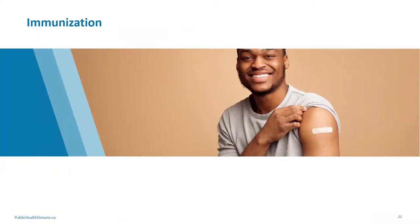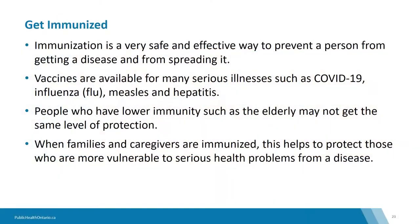Now let's talk a little bit about immunization. One of the best and safest ways to prevent the spread of infection is immunization. It can prevent someone from getting the disease but also prevent them from spreading it. Many vaccines are available for serious diseases such as COVID-19, the flu, measles and hepatitis. Some patients, residents or clients may have lower immunity — such as the elderly or those who are immunocompromised, meaning having a weakened immune system — and may not get the full protective effects of a vaccine. This is why it is important for families and caregivers to be immunized so that they do not spread an infection to their sick or vulnerable family member.